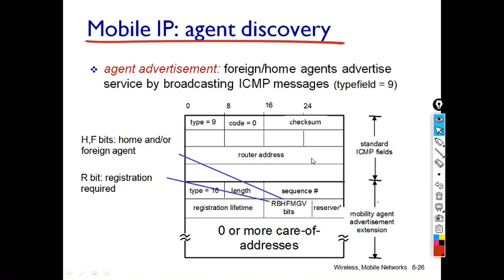The next component is Mobile IP Agent Discovery. As soon as a mobile node enters a new network — whether a Visited Network, Foreign Network, or its Home Network — it needs some method to identify the address of the agent. The process of finding the address of the agent is known as Agent Discovery.